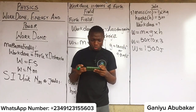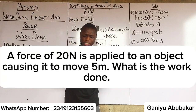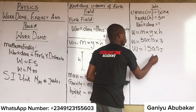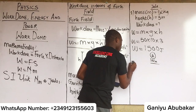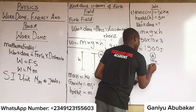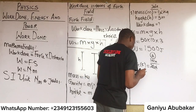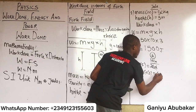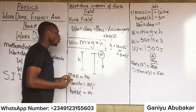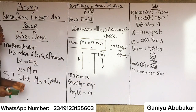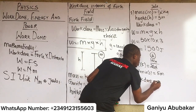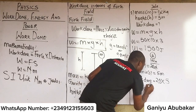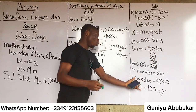Example two: a force of 20 newtons is applied to an object causing it to move 5 meters. What is the work done? Given: force F = 20 N, distance x = 5 m. Using work done W = F × d: W = 20 × 5 = 100 joules.